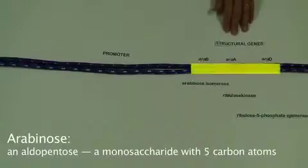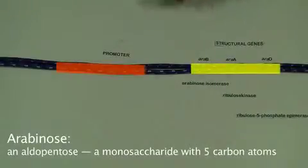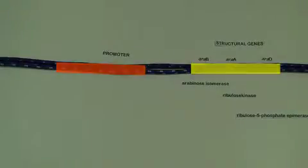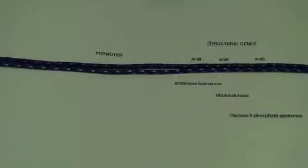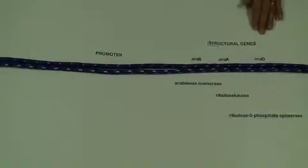There are three structural genes associated with one promoter, and the three structural genes code for three enzymes. The first enzyme is arabinose isomerase, and this enzyme will change arabinose into ribulose. The second enzyme is ribulose kinase, and this will actually add a phosphate to the ribulose. The last enzyme, which is coded for the gene D,